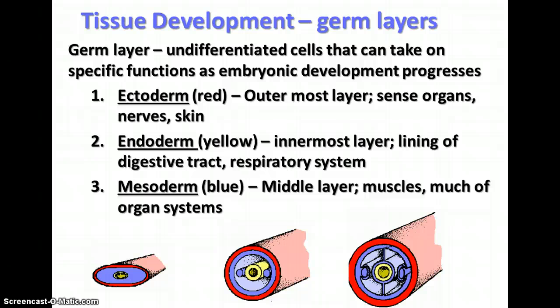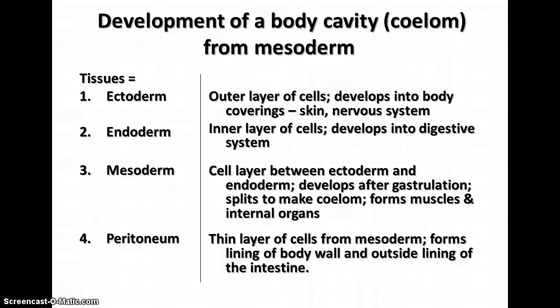The germ layers are the undifferentiated cells at that time, and they will, over time, take on specific functions as development progresses. In the pictures shown here, the ectoderm is shown in red — this is the outermost layer, and it will become the sense organs, the nerves, and the skin or coverings of the organism. The endoderm tissue, shown in yellow, is the innermost layer — this is the lining of the digestive tract and the respiratory system. The mesoderm, the blue layer, is the middle layer, and that will become the muscles and much of the rest of the organ systems found in the animal.